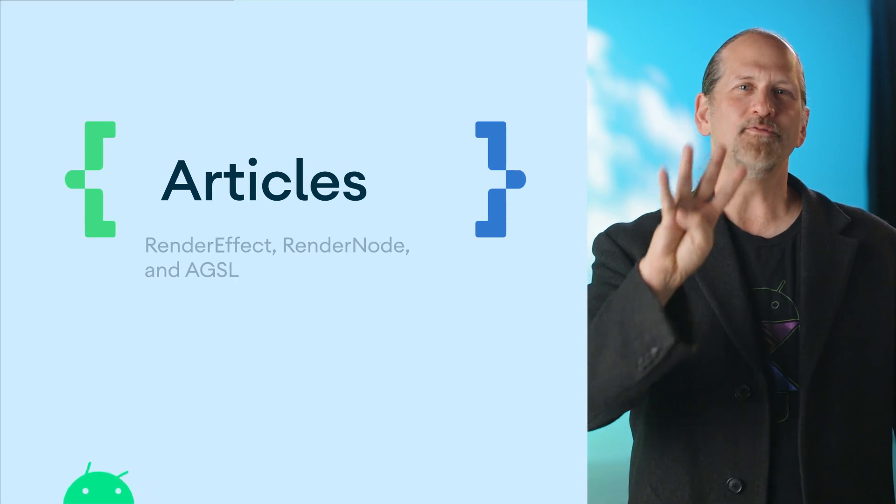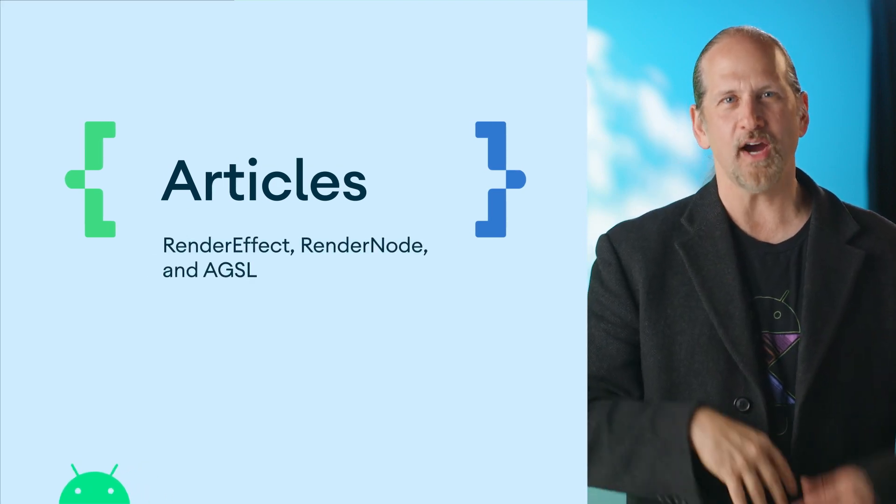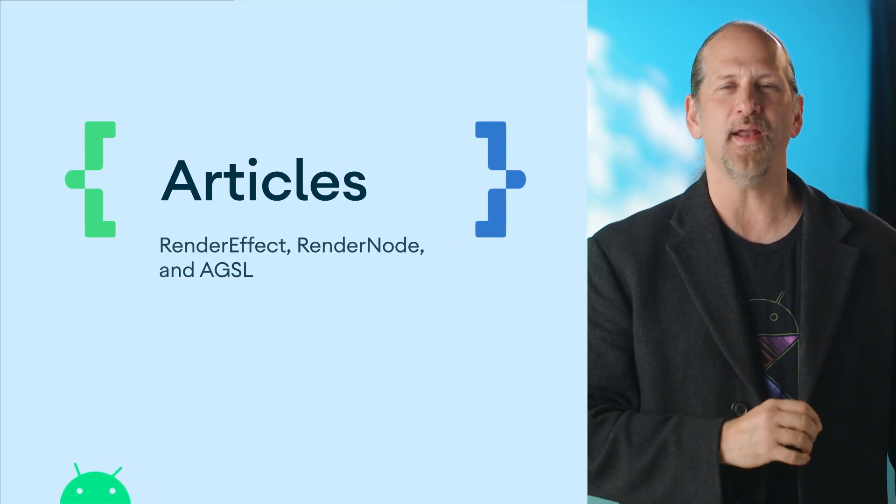We had four graphics-focused articles covering render effect, render node, and AGSL, the Android Graphic Shading Language. Chet began by covering how to use the blur effect introduced with Android 12, followed by an introduction to Android 13's AGSL and how to write pixel shaders that work within Android's canvas drawing system. The next article focused on how to leverage the power of render node, and Rebecca then covered how to animate image vectors and apply AGSL effects in Compose.